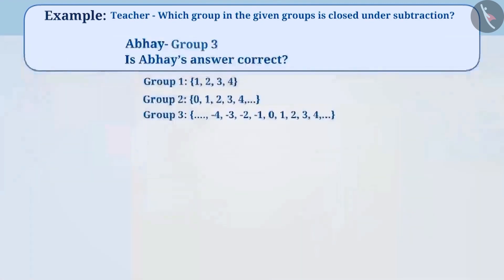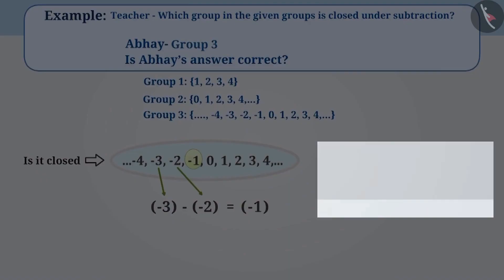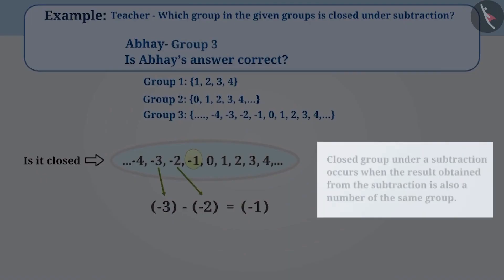A group is closed under an operation when the result obtained from the operation is always part of the same group. In this way, a group is closed under subtraction when the result obtained from the subtraction is also a number of the same group.